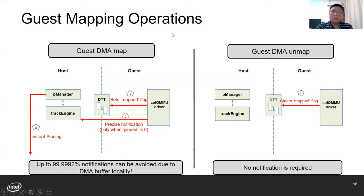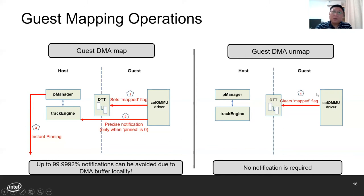Let's take a look at the process of guest DMA mapping operations. For guest DMA map, the guest CoLMMU driver will set the mapped flag for each DMA mapping, and meanwhile check the pinned status of this page. The pinning notification is necessary only when the pinned flag is zero — this means precise notification. The good news is that we found more than 99% of notifications can be avoided, thanks to DMA buffer locality. It is very likely that a recently pinned page will be reused in future DMA operations. For guest DMA unmap, the CoLMMU driver just clears the mapped flag in the DTT, and no notification is needed at all.